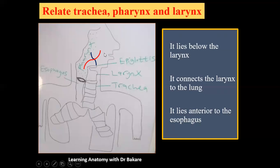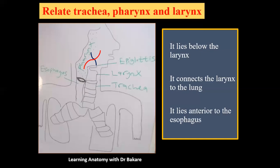When food is placed in the mouth, it goes into the oropharynx, and at that junction the epiglottis closes to prevent food from entering the larynx. The food is directed from the oropharynx into the laryngopharynx, then into the oesophagus, and down to the stomach. The larynx acts as a gatekeeper controlling the passage of air, while the oesophagus lies behind the trachea.